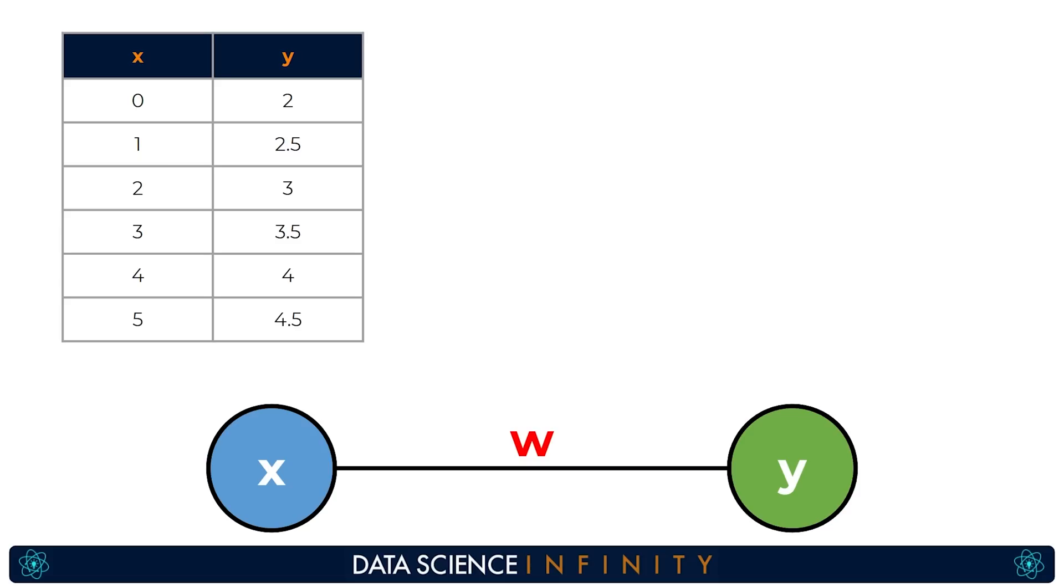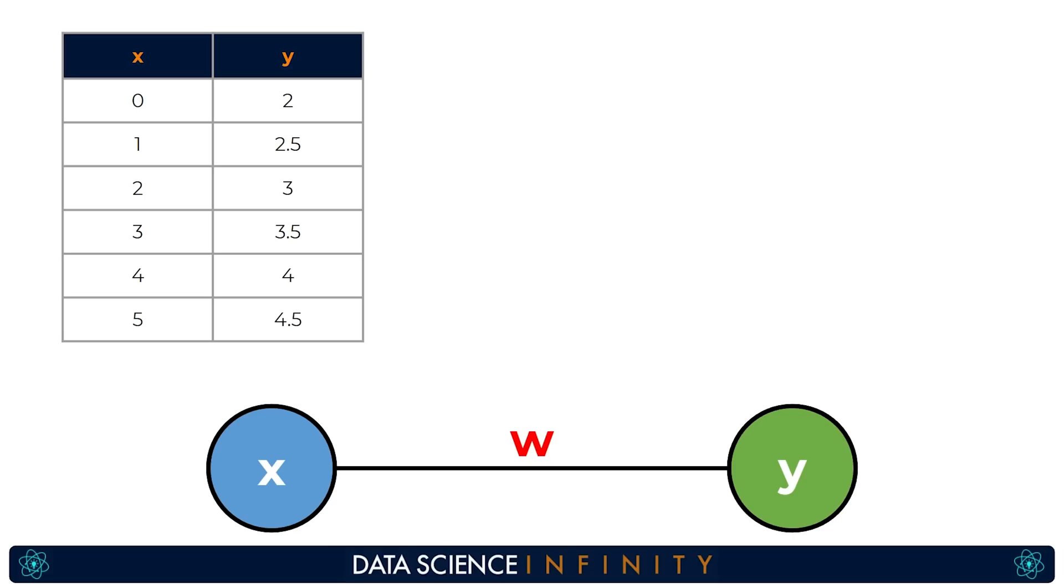So both the x values that would go into our network and the actual output values y. We essentially want our network to find the mapping that links the x values to their corresponding y values. First things first let's plot our x and y values and when we do that we end up with this here over on the right. The orange circles on our plot are the positions of each of our data points with respect to their x and y values.